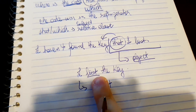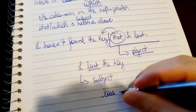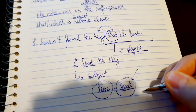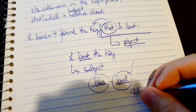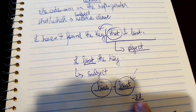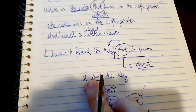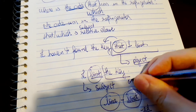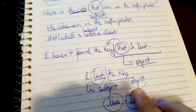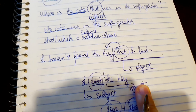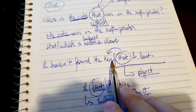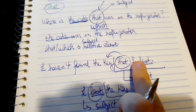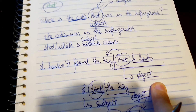When you say 'I lost the key', 'I' is the subject, 'lost' is the verb — simple past of 'lose', an irregular verb — and 'the key' is the object. So when I say 'I haven't found the key that I lost', it's the same as saying 'I lost that' — 'that' is the object of the sentence.